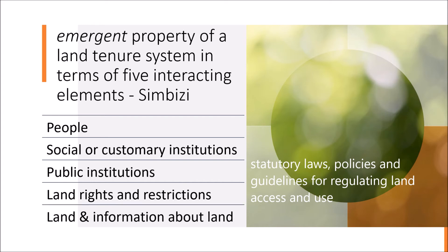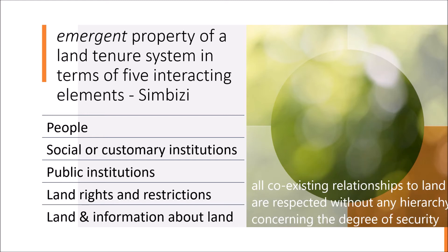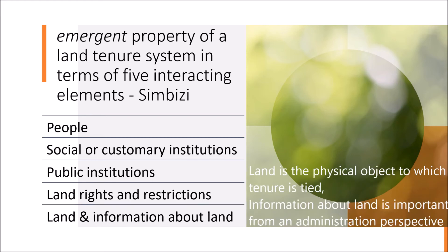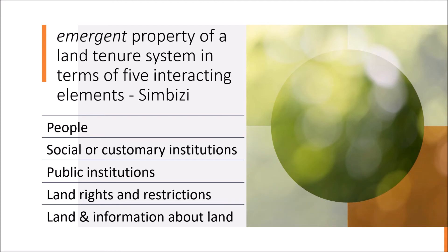In rural communities across sub-Saharan Africa, social and public institutions may actually operate in parallel with different rules and requirements. The land rights and restrictions are acknowledged with respect to the continuum of land rights, in which all coexisting relationships to land are respected without any hierarchy concerning the degree of security. Lastly, land is the physical object to which tenure is tied, and the information about land is important from an administrative perspective. Like Whittle's model, Simbisi's model recognizes that land tenure security is reliant on the interaction of many different stakeholders, including the need for balance between customary and statutory institutions.